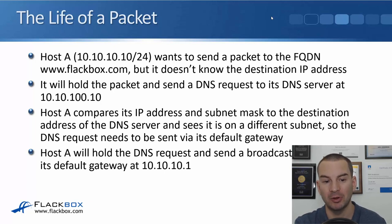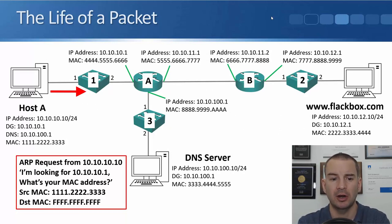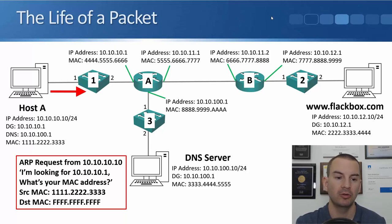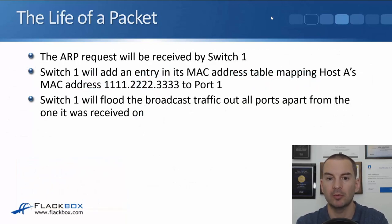Host A will hold the DNS request and send a broadcast ARP request for its default gateway at 10.10.10.1. You can see in the diagram that Host A sends an ARP request from source IP 10.10.10.10, looking for 10.10.10.1, asking for its MAC address. The source MAC is 1.2.3 and the destination MAC is the layer 2 broadcast address of f.f.f. The ARP request is received by Switch1 on the left.